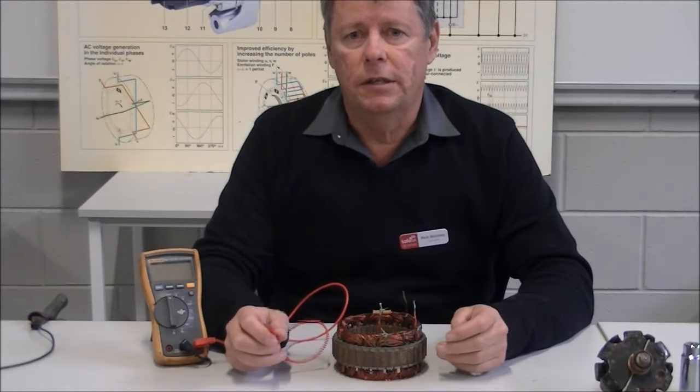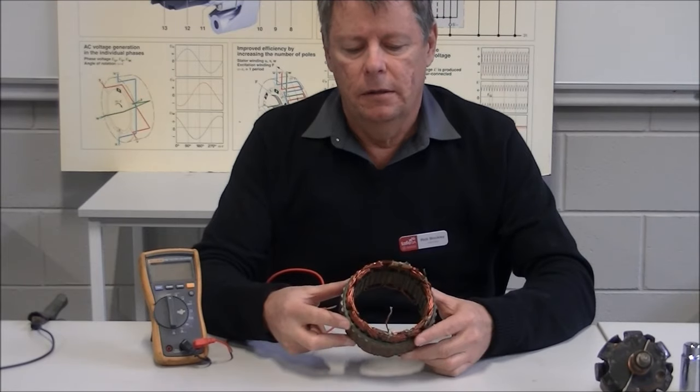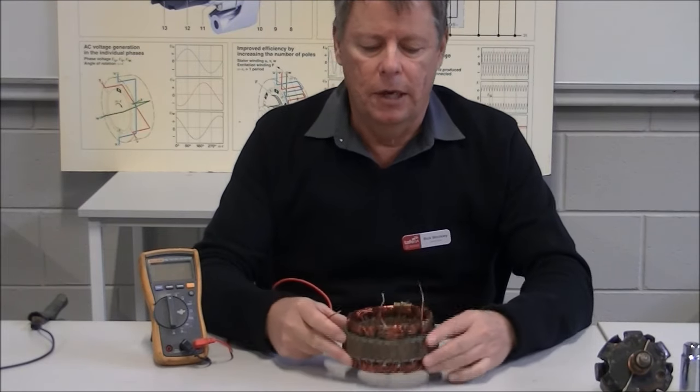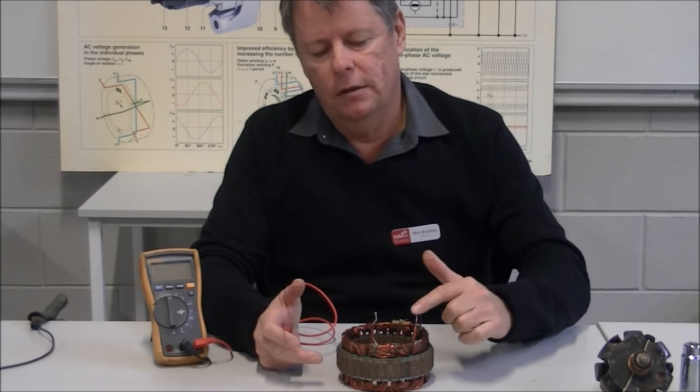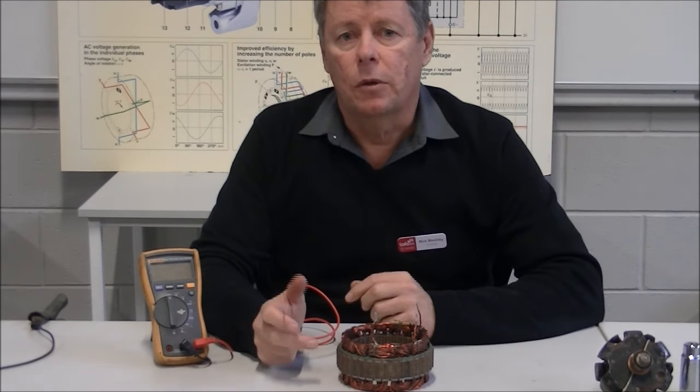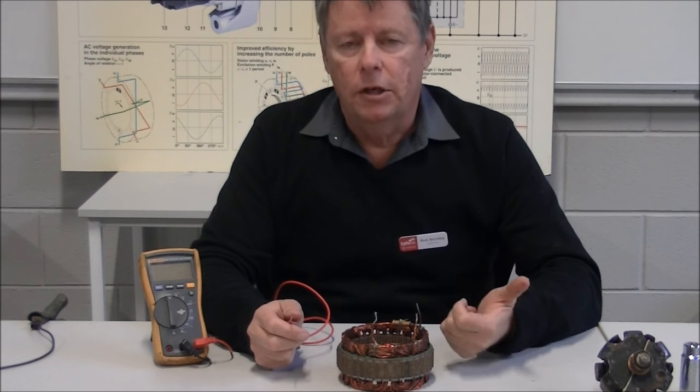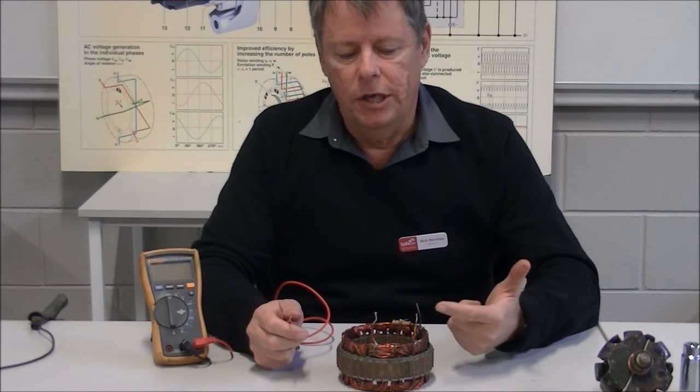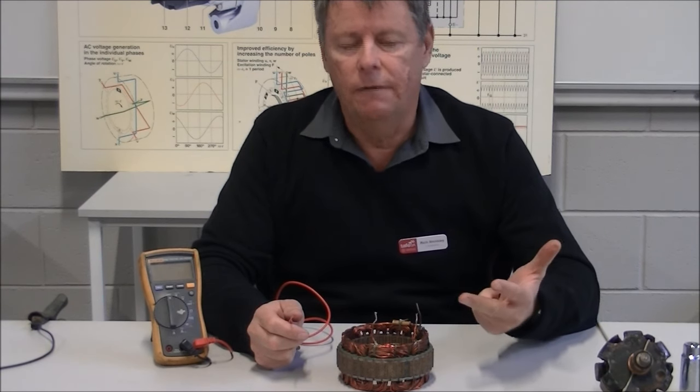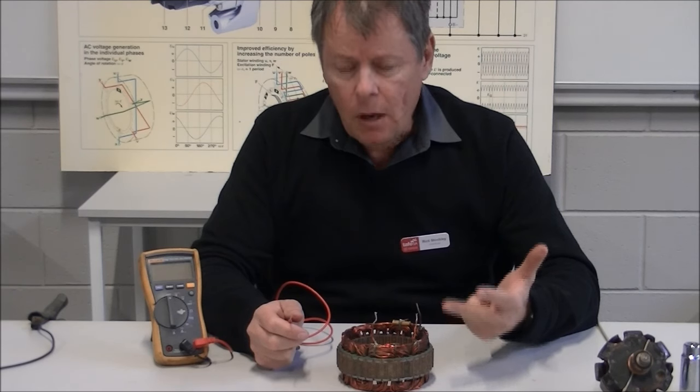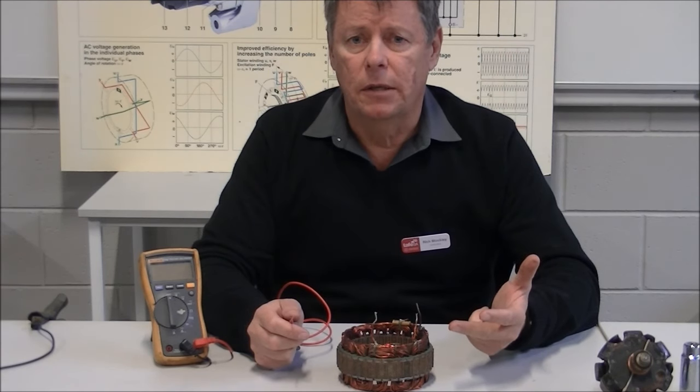The next component we're going to test is the alternator stator. So this is a stator out of a Bosch alternator. You'll see our three stator leads here. So once again, we're going to be testing for insulation above ground, we're going to be checking for shorts, and we're going to be checking for open circuits within the stator windings.